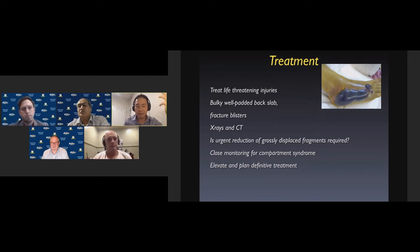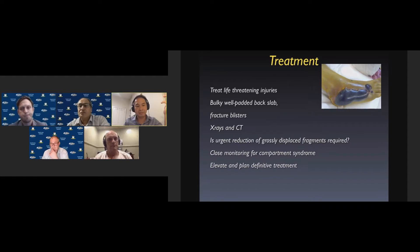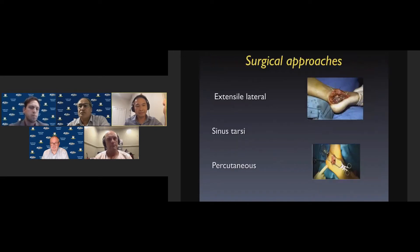At that point we need to make a judgment as to whether any urgent reduction of grossly displaced fragments is required, whether compartment syndrome is occurring, and if none of these are considerations, then we can plan for definitive treatment. There are surgical emergencies — for example, a displaced tongue fragment or tuberosity avulsion fragment left untreated can cause skin necrosis along the Achilles tendon insertion, so this requires urgent reduction and fixation.